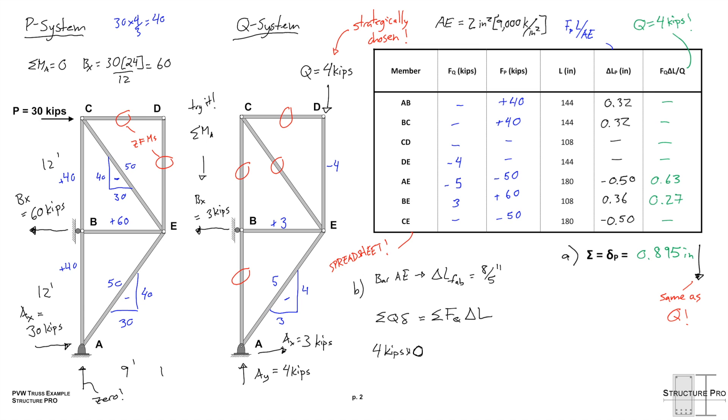So, we can write that the Q of 4 kips applied at D is going to be doing a certain amount of work. In fact, it's going to be doing 4 kips times 0 inches amount of work, which is 0, because we're saying that D is not moving in the vertical direction. But it's not the only external force doing work here in this Q system. Bx will be doing work if we move support B to the right.